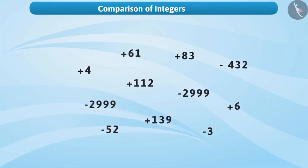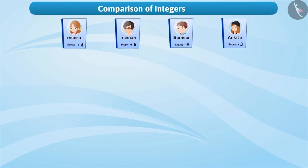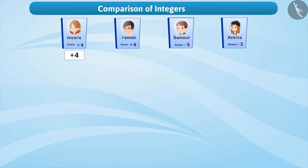Suppose we have to put integers in order. For example, in a competition, Meera scored plus 4, Raman plus 6, Samir minus 5 and Ankita minus 3.